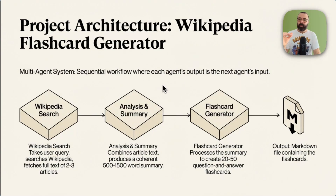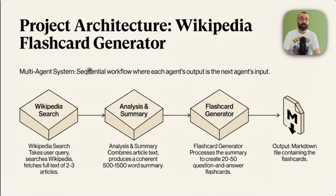The project Eleanor and Isaac were working on was a multi-agent system that generates Wikipedia flashcards. The first agent does a Wikipedia search, the second does an analysis and summary, and the third does the flashcard generation.